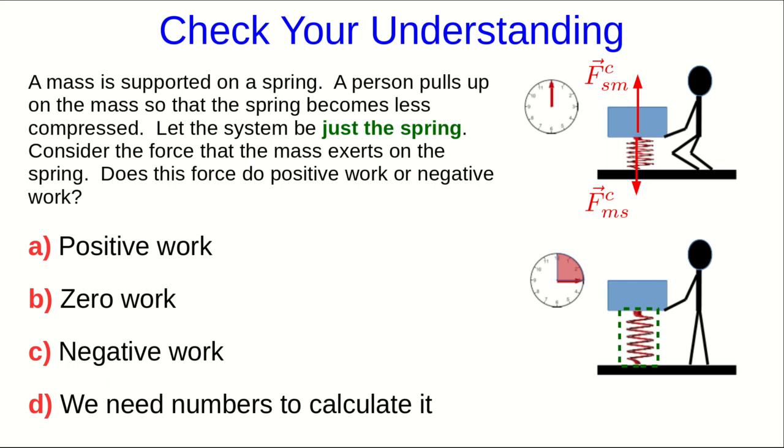So here is this question about the sign of this work, and the key thing to recognize is that the force displacement vector points up, the point where the spring touches the mass moves up, and so the force displacement vector and the force that we're interested in point in opposite directions, and that tells us that this work is negative.